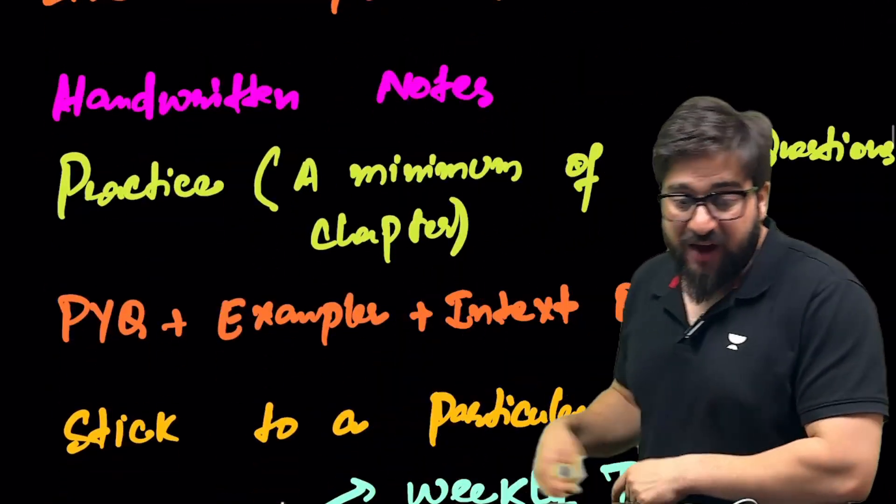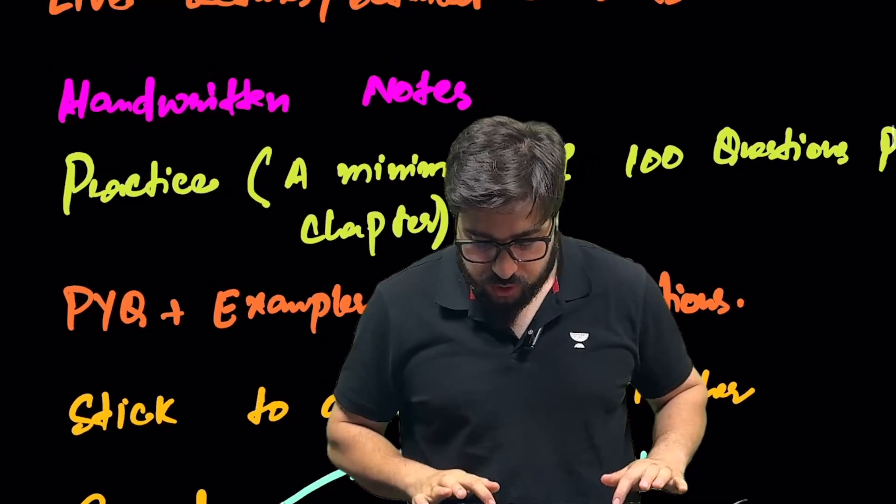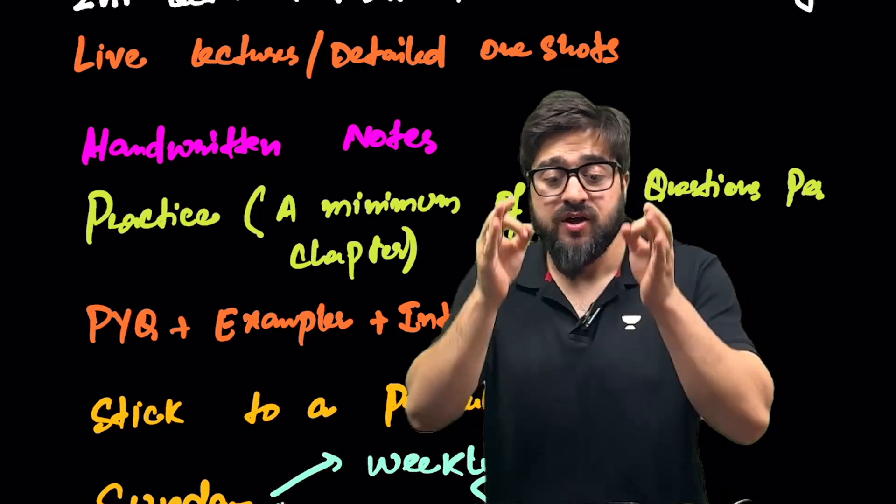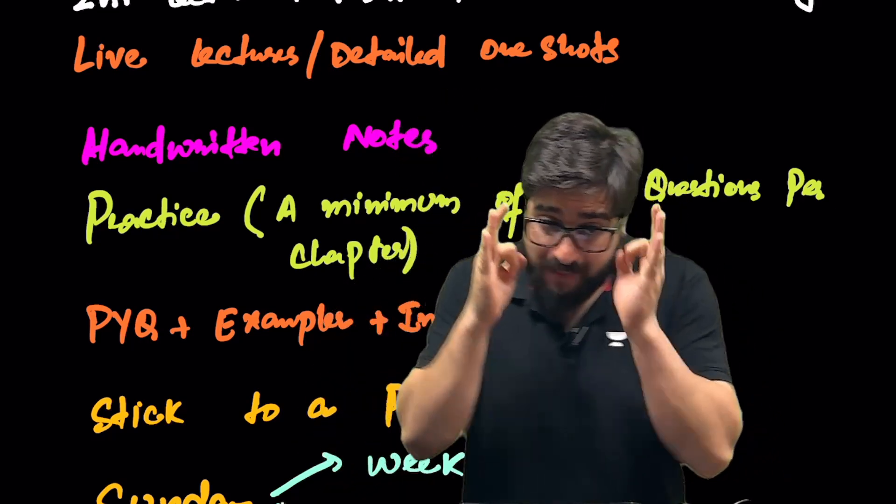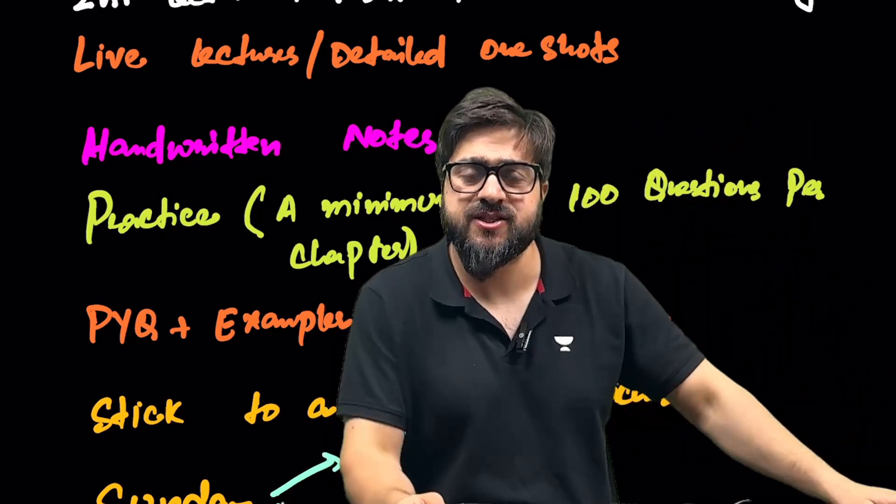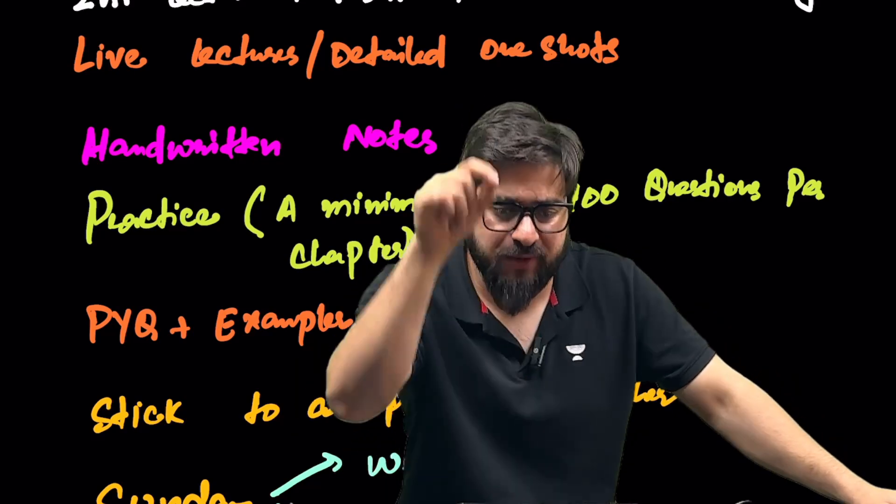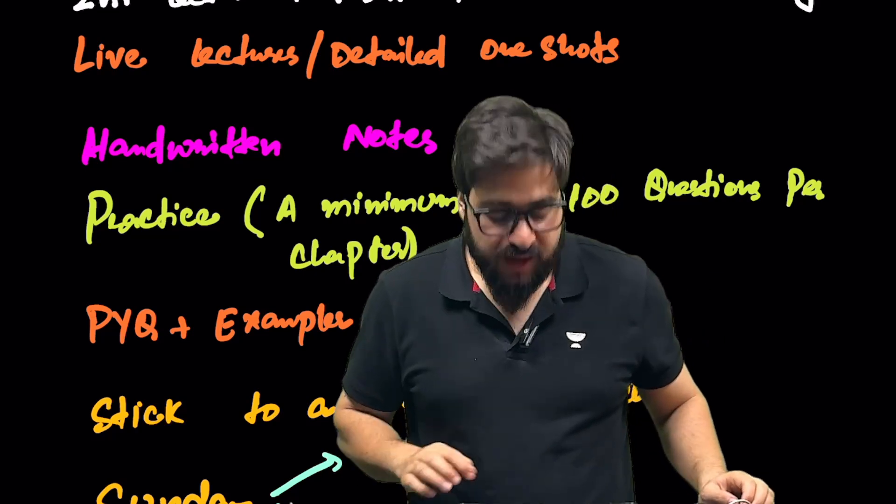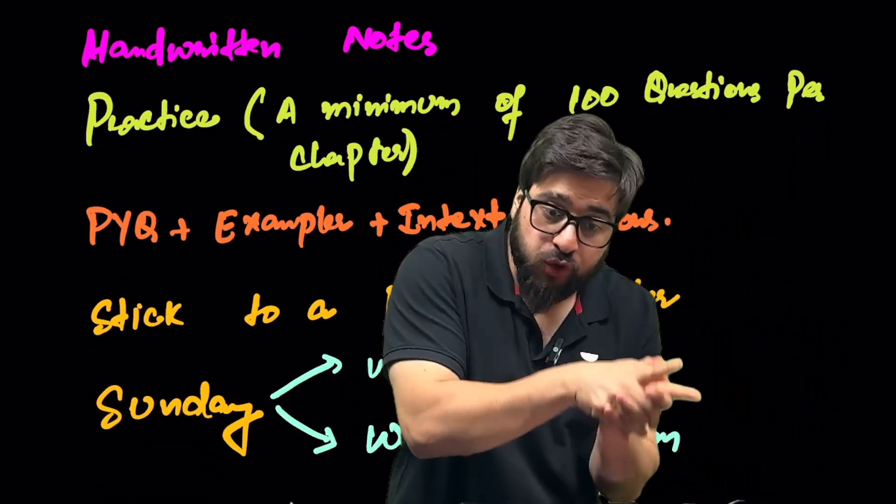Then afterwards, practice. Sir, how many number of questions are we supposed to solve from every single chapter? We say a minimum of 100 questions from every single chapter you guys are supposed to solve. That is mandatory when it comes to physics. Sir, how many questions will you show us in every single chapter in the batch? Mark my words right now, 200 to 300 questions we will be solving in every single chapter inside the batch itself.